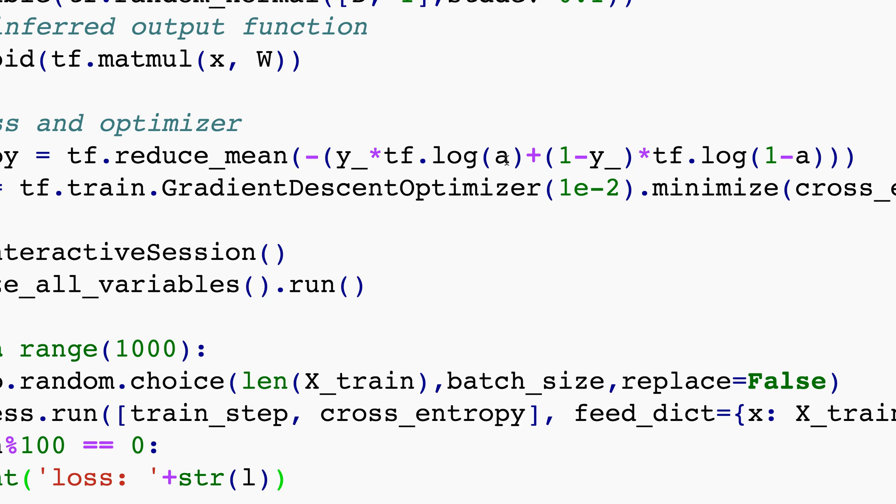And the reason that happens is because of this thing over here, these log values. So the activation sometimes becomes really close to 1 or 0. If it becomes really close to 0, the log of 0 becomes negative infinity and that is going to be a numerical problem.